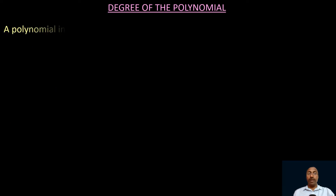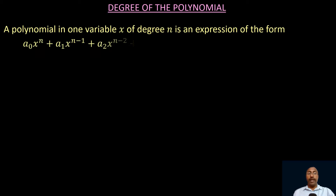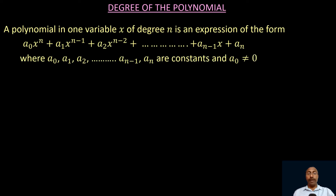A polynomial in one variable x of degree n is of the form: a₀xⁿ plus a₁xⁿ⁻¹ plus a₂xⁿ⁻² up to aₙ₋₁x plus aₙ, where a₀, a₁, a₂, ..., aₙ are constants and a₀ ≠ 0. If a₀ equals 0, the first term becomes 0, and the expression starts from the second term with degree n minus 1, making it a polynomial of degree n minus 1. So we require a₀ ≠ 0 to ensure the degree of the polynomial is n.